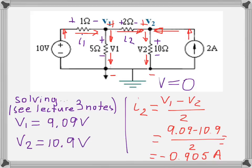A negative result means the actual current I2 flows in the opposite direction to what we assumed. This is fine — you don't need to worry if your answer is negative; it simply means your guessed direction was reversed. So current I2 actually flows from node V2 to node V1. Once we know every current value and resistance, we can also find the voltage across each resistor or the power delivered or dissipated by any component in the circuit.